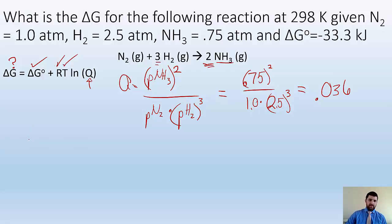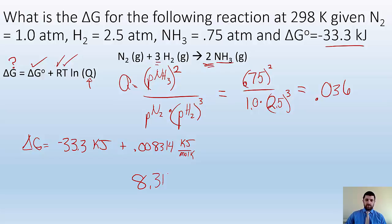So why don't I plug that back in there? So I get delta G equals delta G0, which is given right here, so negative 33.3 kilojoules plus R, which I have to use 0.008314 because that is for kilojoules per mole kelvin. Remember, it's 8.314, but that is in terms of joules per mole kelvin.